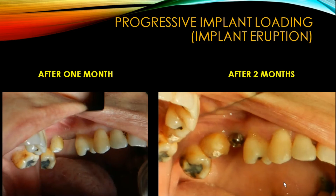Progressive implant loading — or what I call implant eruption. After one month, the patient came again and we modified the crown; we enlarged the crown. After two months, we again modified the crown, enlarged it, and also increased the height. The 2.5 implant is seen here exposed with a healing abutment placed.